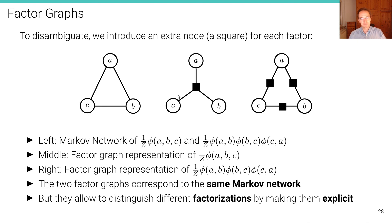So the two factor graphs here correspond to the same Markov network in terms of conditional independence assumptions, but they distinguish the different types of distributions that can be expressed, and so they allow to distinguish the different factorizations by making them explicit.